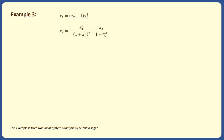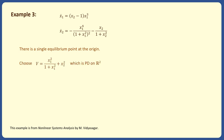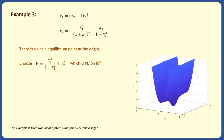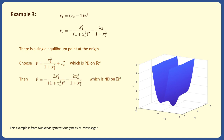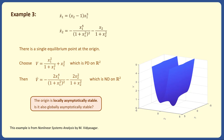Consider this second-order system, which has only one equilibrium point at the origin. To show the asymptotic stability of the origin, we choose a Lyapunov candidate V. This function is positive definite, as it is 0 at 0 and positive for all other points in R2. We then calculate V_dot and obtain that it is a negative definite function. So we obtain from the Lyapunov stability theorem that the origin is locally asymptotically stable.